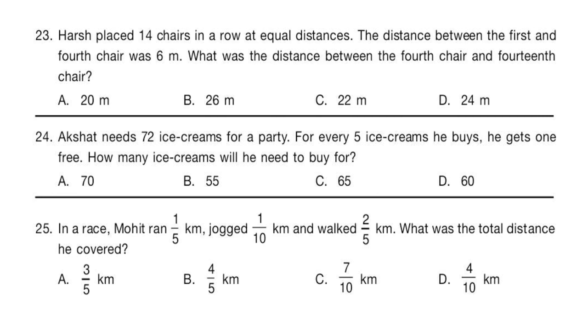Question 24: Akshat needs 72 ice creams for a party. For every 5 ice cream he buys, he gets 1 free. Question 25: In a race, Mohit ran 1/5 kilometer, jogged 1/10 kilometer and walked 2/5 kilometer. What was the total distance he covered?